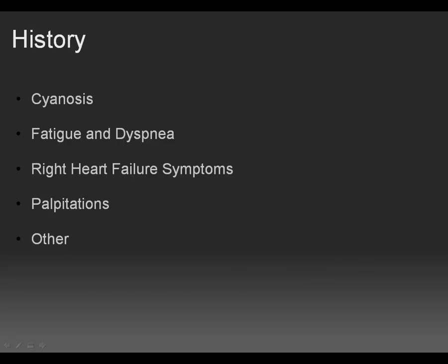Some of these clinical characteristics may appear on imaging requisition forms. The most prominent and common finding is cyanosis, which is dependent upon tricuspid regurgitation. Severe tricuspid regurgitation leads to decreased pulmonary blood flow and right atrial dilatation. Blood is then shunted right-to-left across the PFO or ASD, and since this is deoxygenated blood, this leads to a cyanotic patient. Patients also have fatigue and dyspnea secondary to decreased cardiac output and right ventricular heart failure.